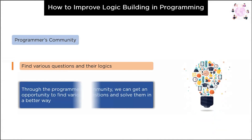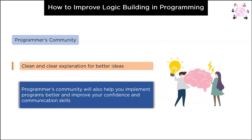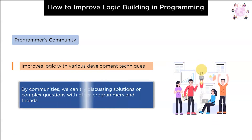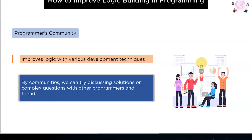Stage seven is about the Programmer's Community. We often get bored while solving problems all by ourselves with no one to teach or guide us. Through the Programmer's Community, we can find various questions and solve them in a better way, or you may help someone else as well. Solving questions within a community gives a more complete idea of the working process and development process of a program, and it also improves logic with various development techniques.